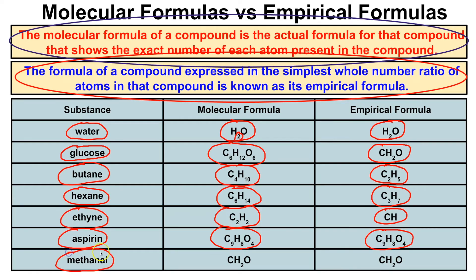For methanol, the molecular formula is CH2O, and we cannot factor out anything further from these subscripts, so its empirical formula is also CH2O. Notice that both glucose and methanol share the empirical formula CH2O. This means more than one compound can have the same empirical formula, but only one specific compound can have a given molecular formula — H2O, for example, will always be water.